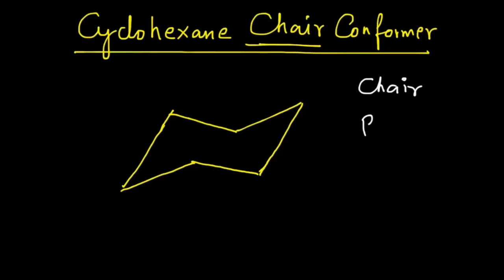stable one. Then you have the boat conformation, and the final one is the twist boat conformation. There are other conformers possible apart from these, but they are not as stable. The most stable one of these is the